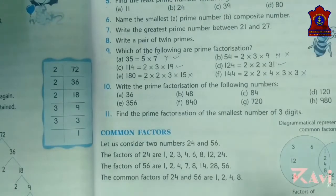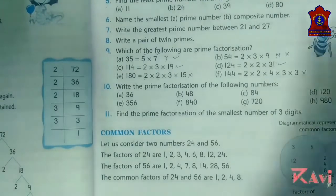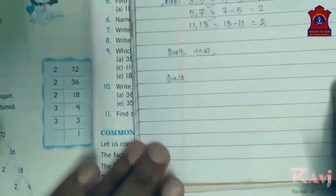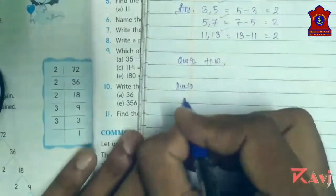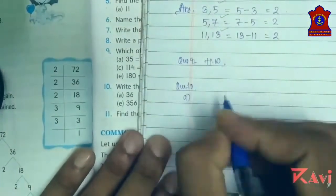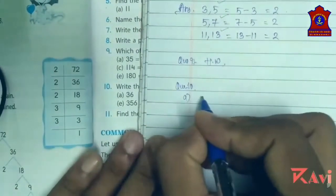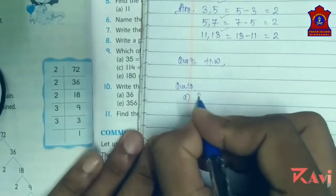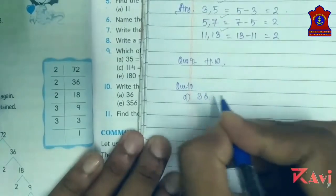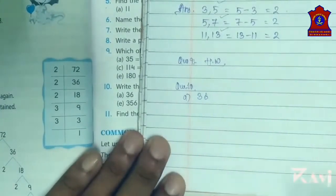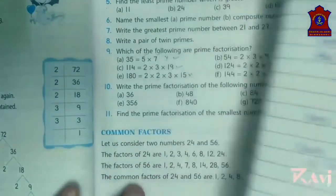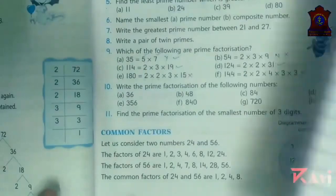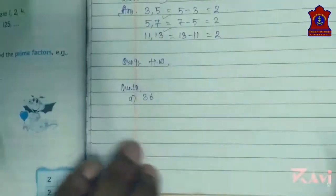See here. The numbers given are 10, 8, and 36. You have to find the prime factorization of these numbers.